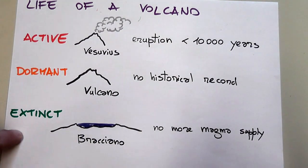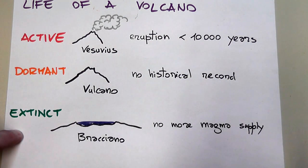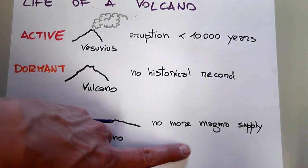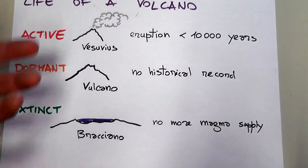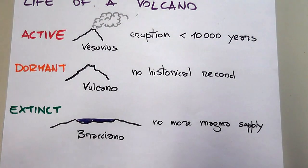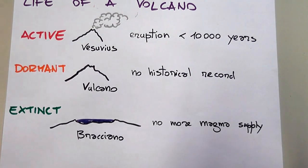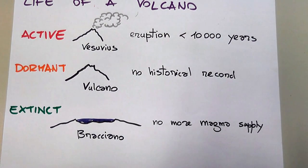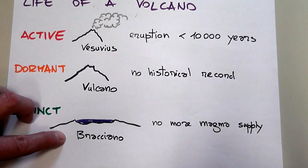Finally, we have extinct volcanoes — volcanoes that, as far as we know, are very unlikely to erupt ever again, mainly because they have no more magma supply. They don't have any more molten rock underground that could supply an eruption. Many extinct volcanoes have been filled by water over the ages and become volcanic lakes, like the lake of Bracciano in central Italy.